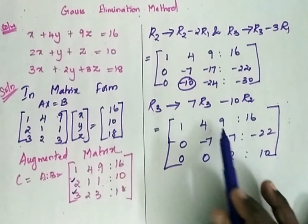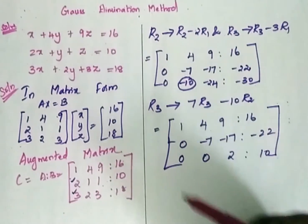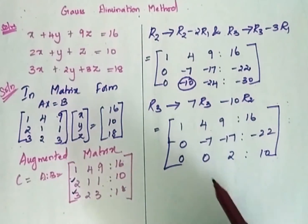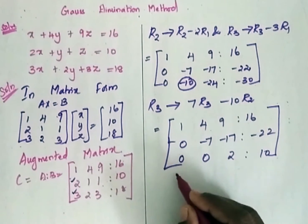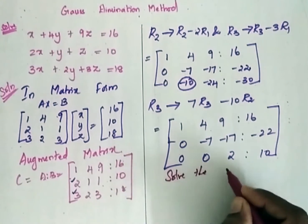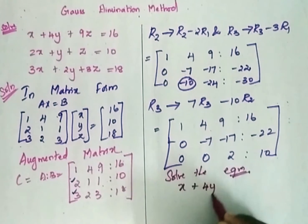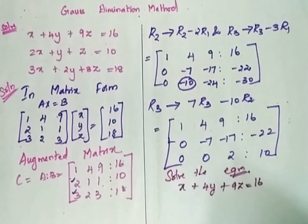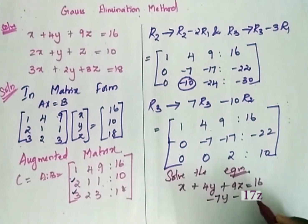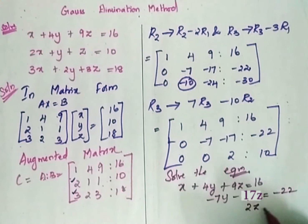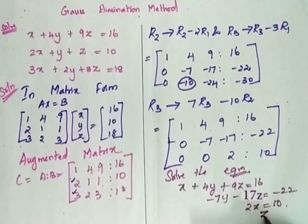Now we have obtained this format of the matrix and it has to be solved for X, Y, Z. The equations are: X plus 4Y plus 9Z is equal to 16; minus 7Y minus 17Z is equal to minus 22; and 2Z is equal to 10. From the third equation, 2Z equals 10, so Z is equal to 5.